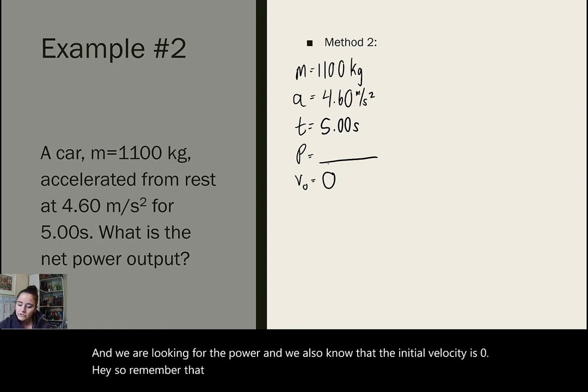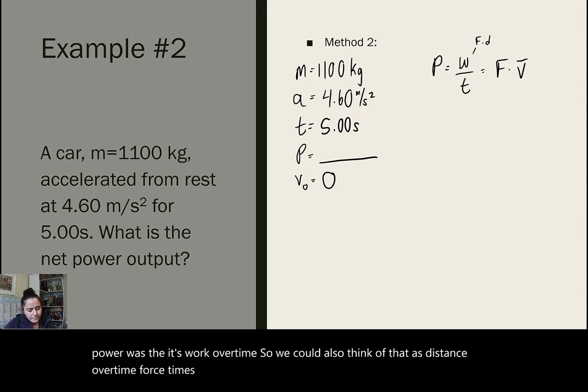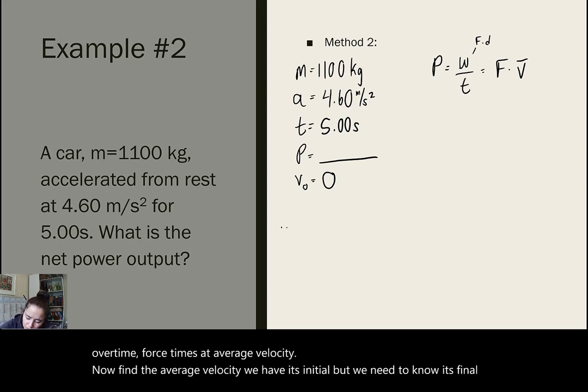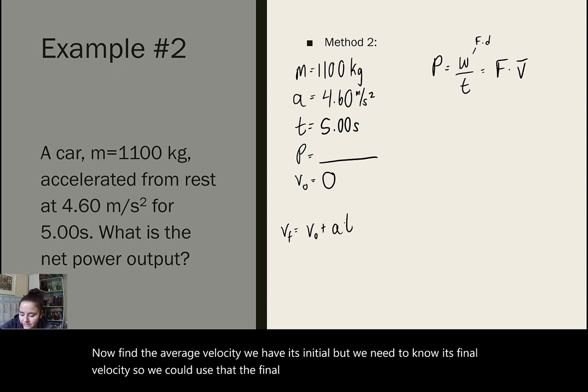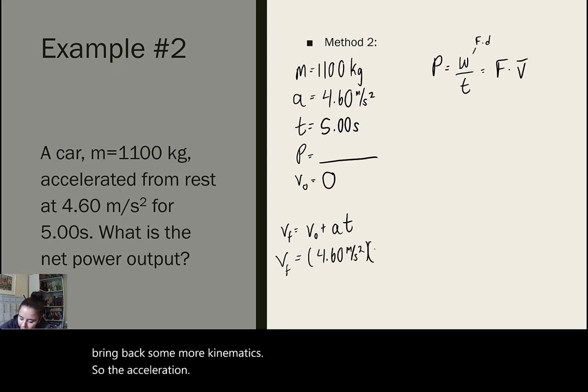So, remember that other form of the power equation we showed? Where the power was work over time, so we could also think of that as force times that average velocity. Now, to find the average velocity, we have its initial, but we need to know its final velocity. So, we could use that v final equals v initial plus acceleration times time. Bringing back some more kinematics. So, the acceleration times the time gives us a final velocity of 23 meters per second.